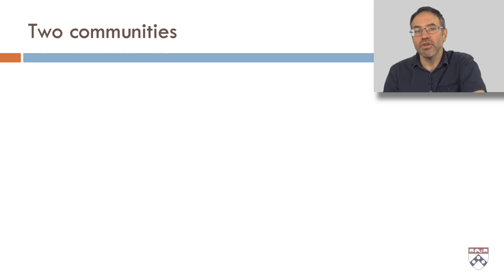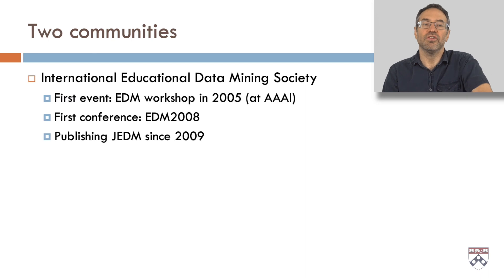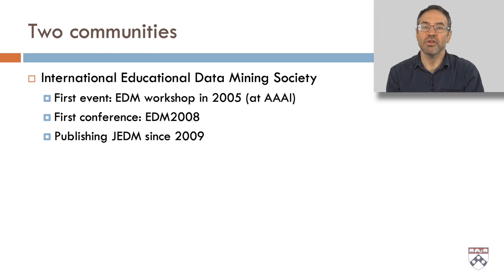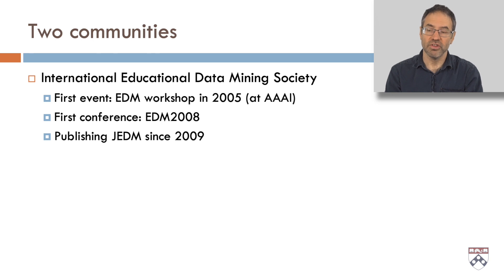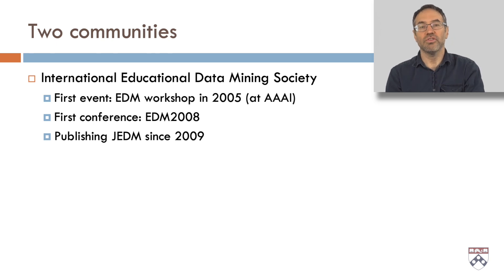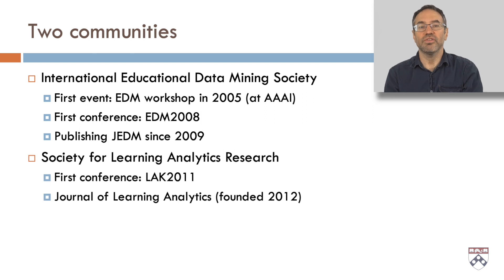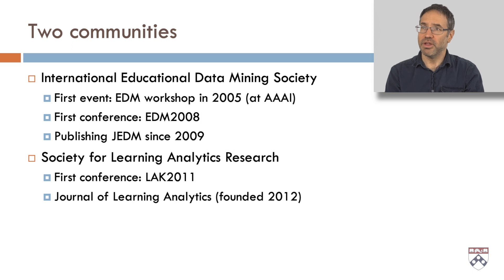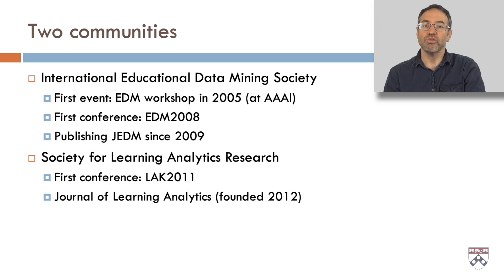In data science and education, two communities have sprung up. The first is the International Educational Data Mining Society — its first event was a workshop in 2005 at what was then called the American Association for Artificial Intelligence. The first conference was Educational Data Mining 2008 in Montreal, and they've been publishing the Journal of Educational Data Mining since 2009. The other community is the Society for Learning Analytics Research, which held its first conference in Canada in 2011 and launched the Journal of Learning Analytics in 2012.